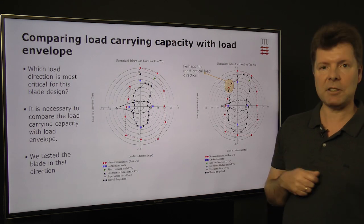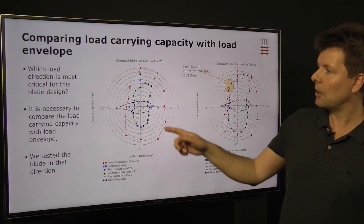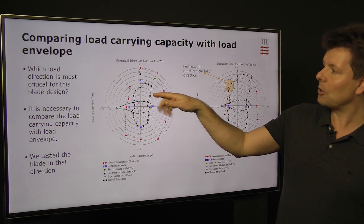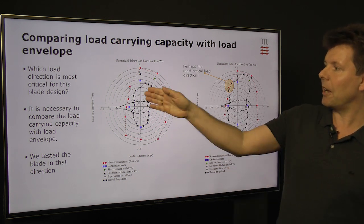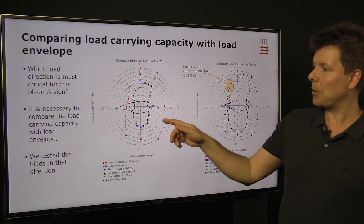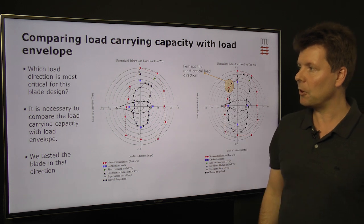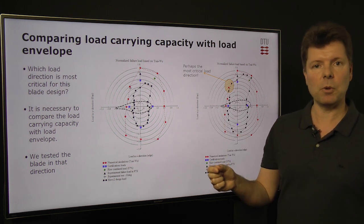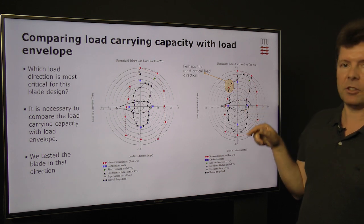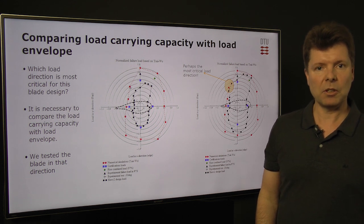To see if that's critical, we must compare the loads with the load-carrying capacity. The black curve shows the actual loads. Luckily, the loads are highest in the flap-wise direction and lowest in the edge-wise direction, so it's not critical. But if we scale the loads until they reach the load-carrying envelope, we can identify the most critical part of the blade. Scaling until it touches the load-envelope curve, we see that this direction is most likely the most critical.